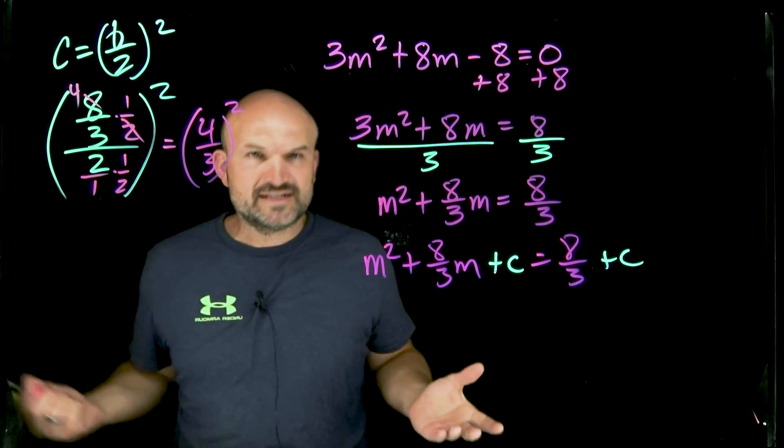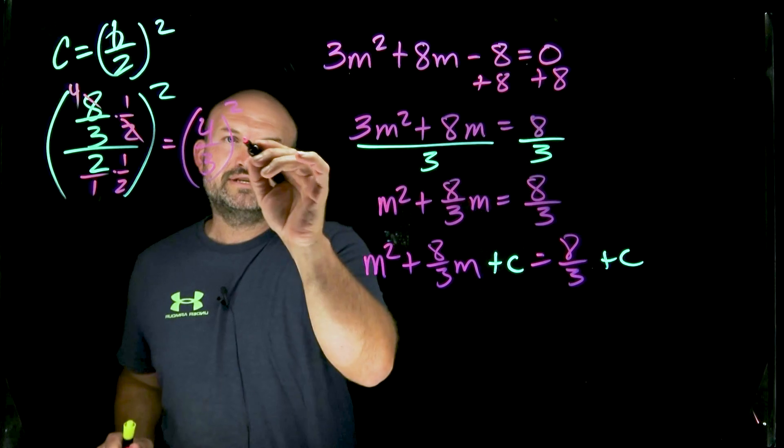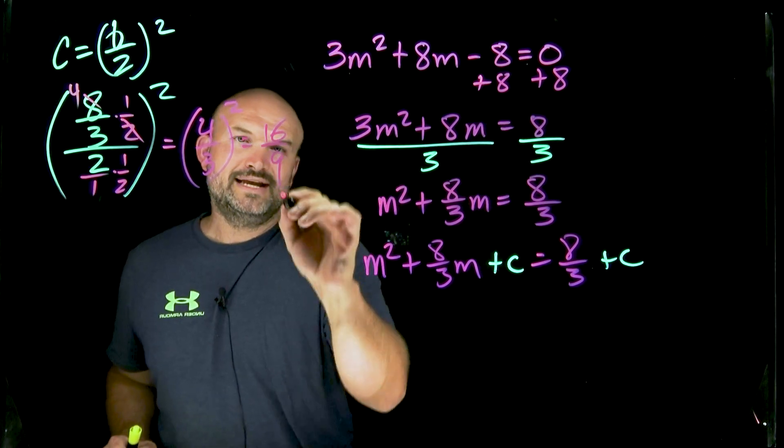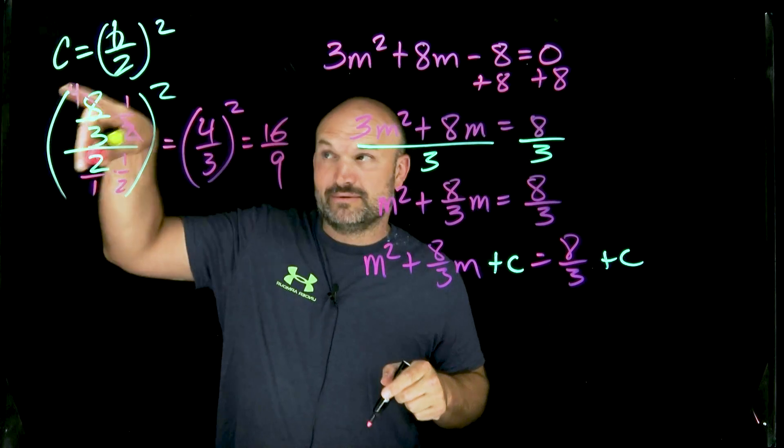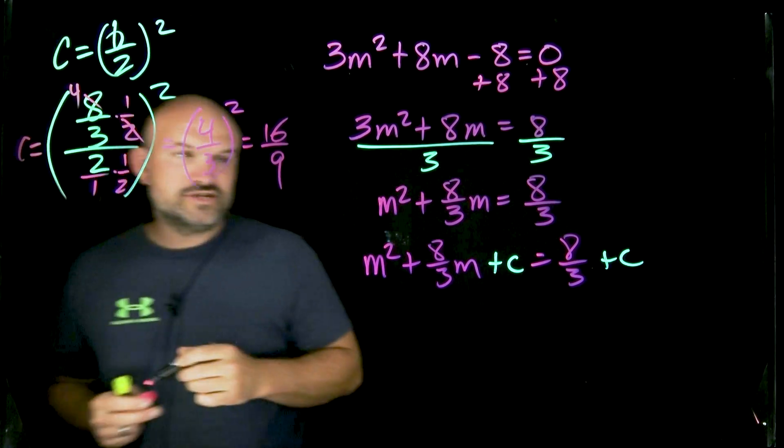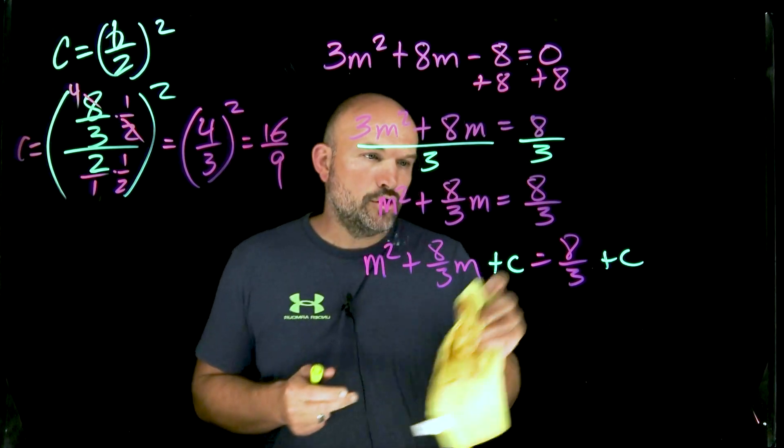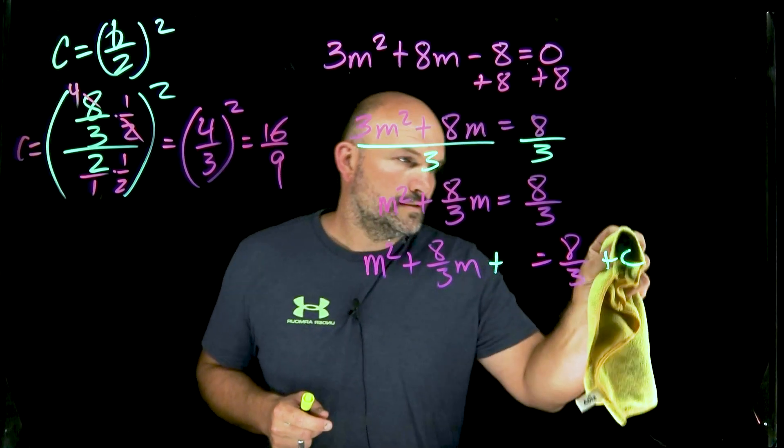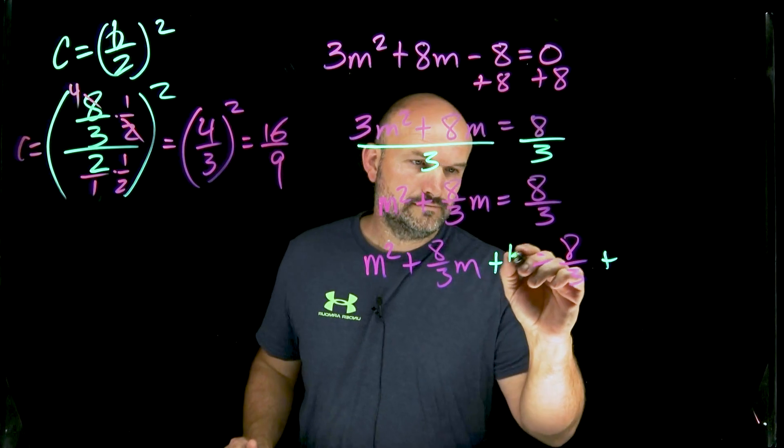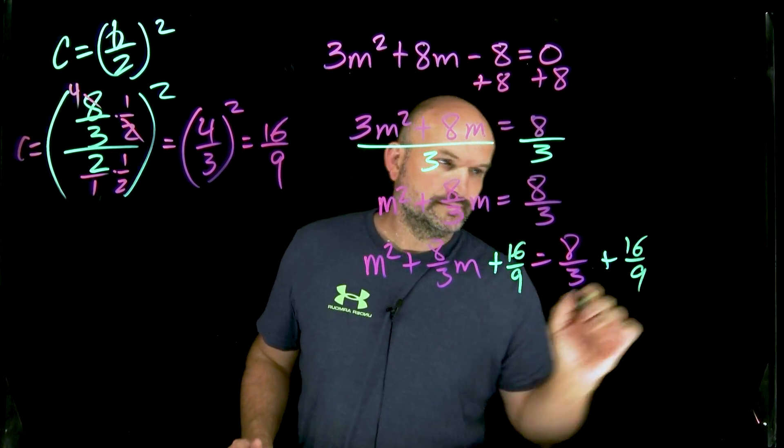So I have a four-thirds squared. Remember, that's just four-thirds times four-thirds. So that's going to give me a 16 over a 9. That is my C. Remember, ladies and gentlemen, that is the C. So now what we can do is I can replace my C over here with a 16 over a 9.